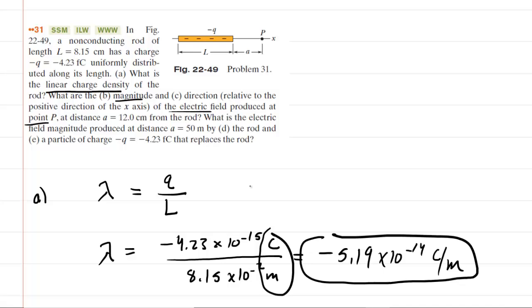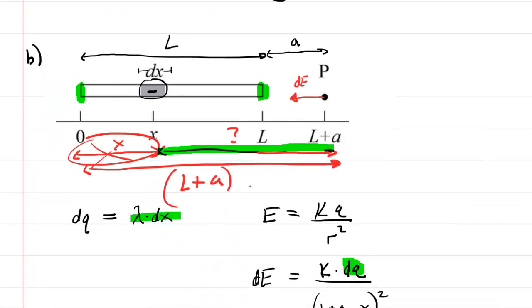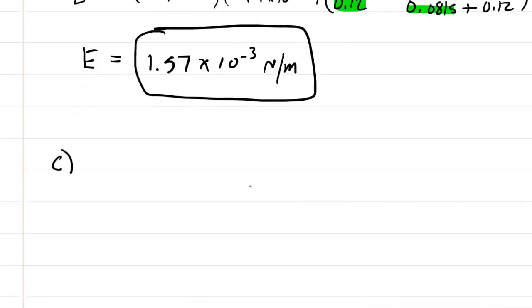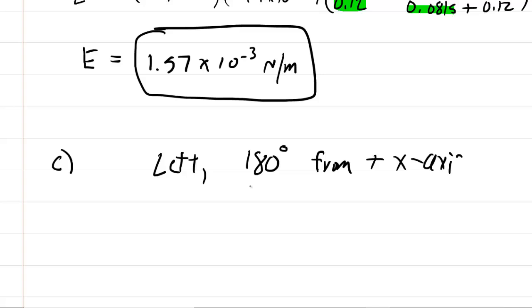For part C, they want the direction. We already indicated that the negative charge on the differential element produces an electric field that points to the left. All of these differential elements are negative, so they all create little electric fields pointing to the left. When you add these all up by integrating, you end up with a total electric field that points to the left. If your homework system wants an angle, it might be represented as 180 degrees from the positive x-axis — going 180 degrees from the positive x-axis points to the left. Either way should be fine.